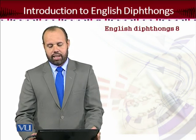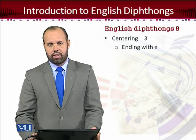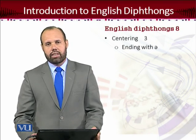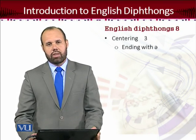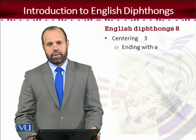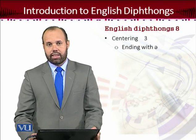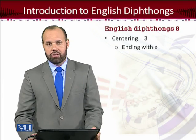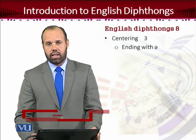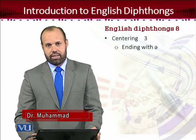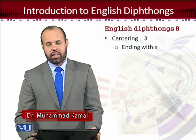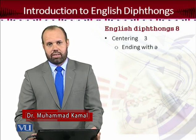The first category is centering diphthongs. By centering diphthongs, we mean that the movement is from the sides towards the center of the tongue. The schwa, which is a central sound pronounced from the center of the tongue, is where there is movement towards. So the ending sound in a centering diphthong is a schwa sound.